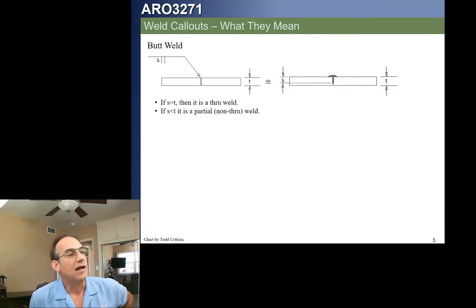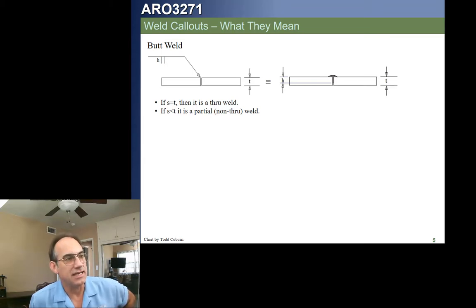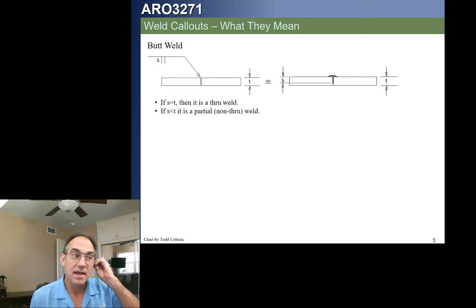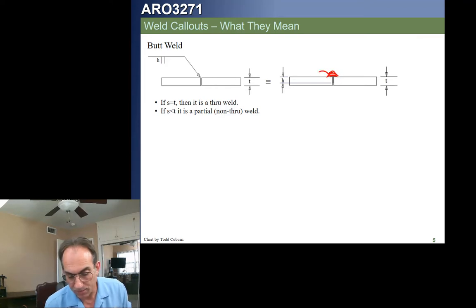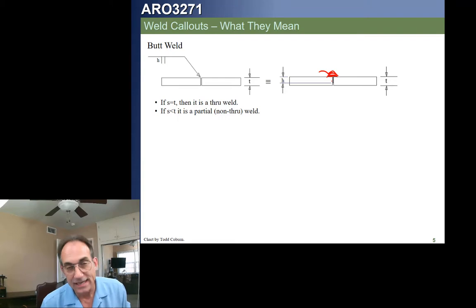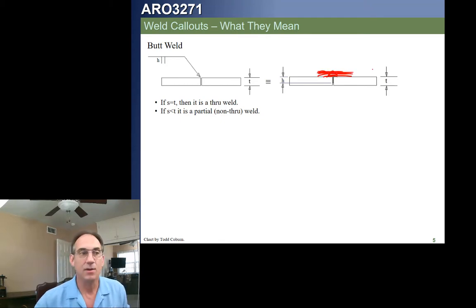For a butt weld of size H on the near side, if there's no information about the depth of the weld, we assume it's the full thickness. There can also be depth information — if the weld size equals the plate thickness, it's all the way through. The extra material on top is called reinforcement. It slightly increases static weld strength, though we never account for that, and it decreases fatigue life — so in fatigue applications, we often grind it off.